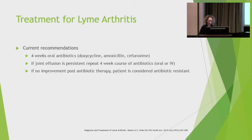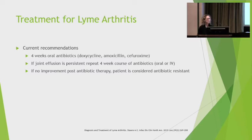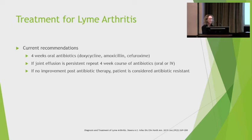Treatment is four weeks of oral antibiotics — doxycycline, amoxicillin, or cefuroxime depending on allergies and patient age. If the joint effusion persists or worsens, there is discussion about IV antibiotics, but typically a second course of oral antibiotics is given. If there is no improvement after antibiotic therapy, these patients are considered antibiotic-resistant, which is where there is some controversy about what to do next.